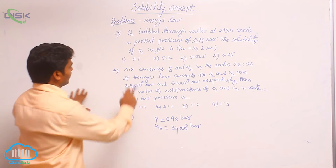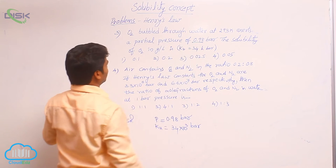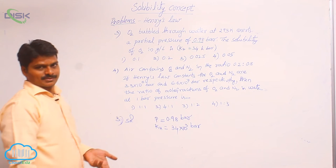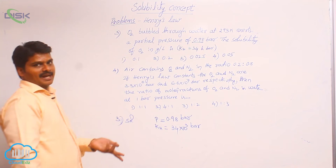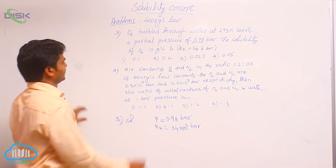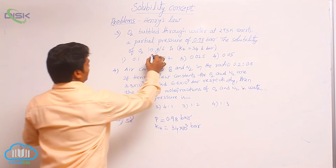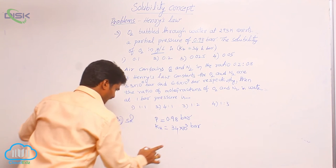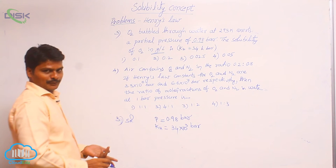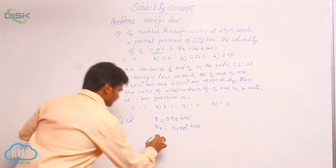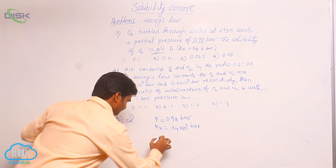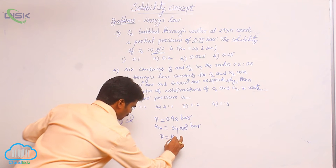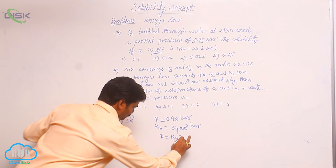Finally, what is asked is the solubility. What is solubility? Solute weight in 100 grams of solvent. But here it is asked in grams per liter. So first, let us find out the mole fraction of solute. From Henry's law formula, we can write P is equal to K_H into x2.